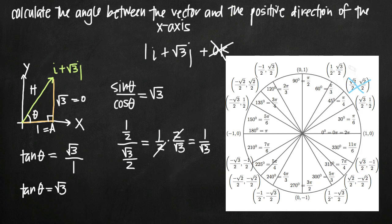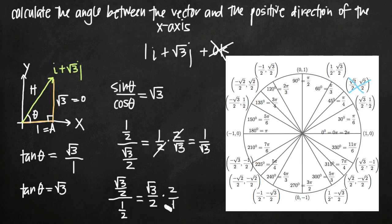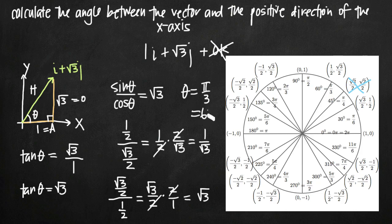Testing theta equals pi over 3: the sine value is square root of 3 over 2 and the cosine value is 1/2. Dividing square root of 3 over 2 by 1/2 — we multiply by the reciprocal, flipping 1/2 to 2/1 — the 2's cancel and we're left with square root of 3. That matches our equation, so theta equals pi over 3, which is the same as 60 degrees.